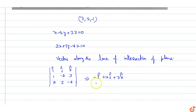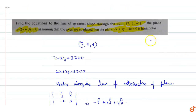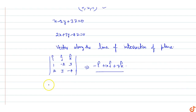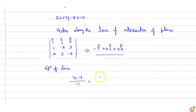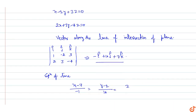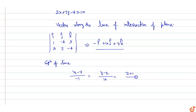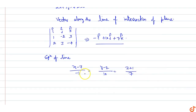The direction ratios are (-1, 10, 7) and the line passes through the point (7, 2, -1). So the equation of the line is: (x - 7) / (-1) = (y - 2) / 10 = (z + 1) / 7.